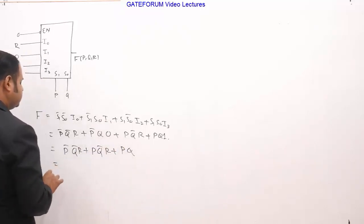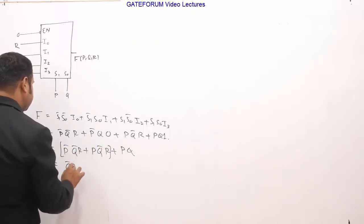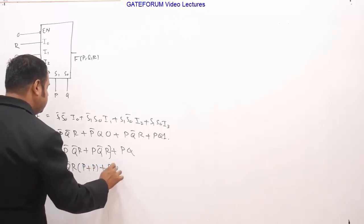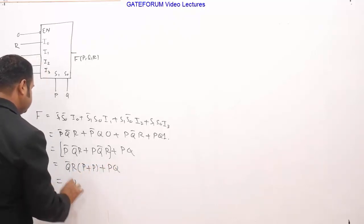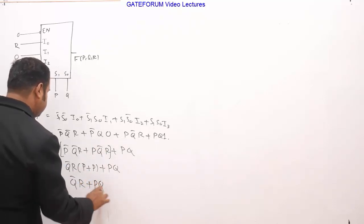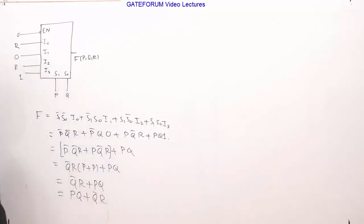So from the first two terms, from these two terms, we can take Q bar R common, so this happens to be P bar plus P, and this is PQ. So this is Q bar R, because P bar plus P is 1, plus PQ. And this is equivalent to PQ plus Q bar R. So the answer is PQ plus Q bar R.